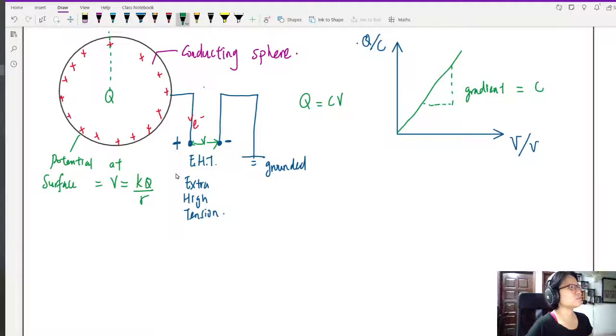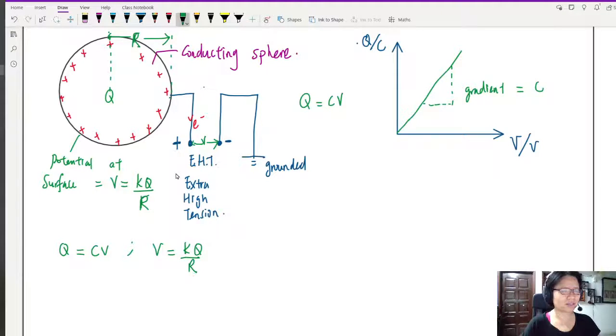So then you might be thinking, okay, I'm just going to use big R here. So then you might be thinking, I know Q is equal to CV. I know that V is equal to KQ over R. Can be substituted.